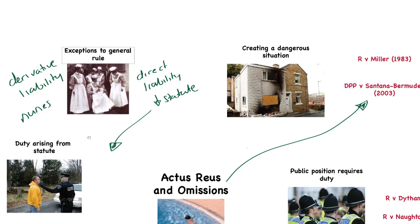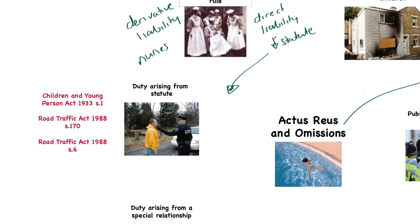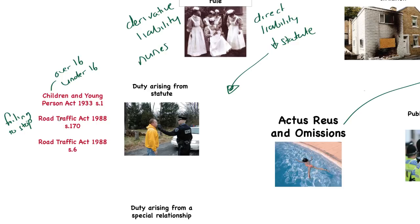Looking at direct liability examples: the Children and Young Persons Act 1933 says that a person over 16 who has care of a child under 16 has a legal obligation to care for them — failing to do so is an omission that creates liability. The Road Traffic Act 1988, Section 170, requires you to stop and swap details after an accident; failing to do that is an omission making you criminally liable.